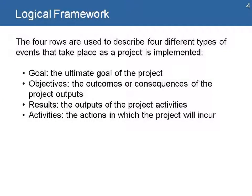The four rows are used to describe four different types of events that take place as the project is implemented. We have the goal — the ultimate goal of the project. Objectives — the outcomes or consequences of the project outputs. Results — also known as the outputs of the project activities. And the activities — the actions in which a project will engage.